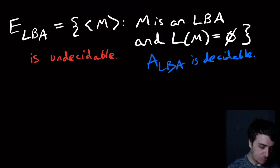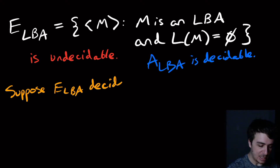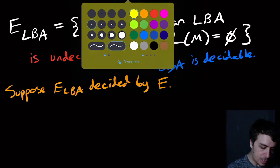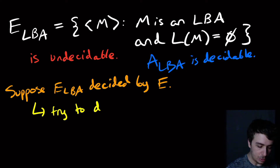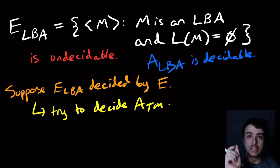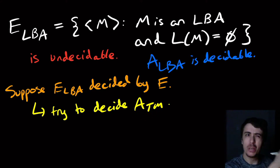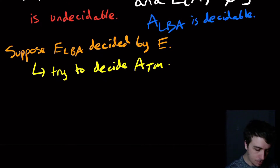We'll suppose that E_LBA is decidable — let's say it's decided by a machine E, which takes an LBA as input and determines whether its language is empty. Then we'll try to use that to decide the A_TM problem. A_TM takes a Turing machine as input, not an LBA, because A_LBA is decidable and that wouldn't help us. We need to decide A_TM; you could reduce from other undecidable problems, but A_TM is the standard approach.